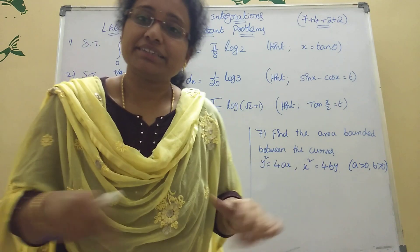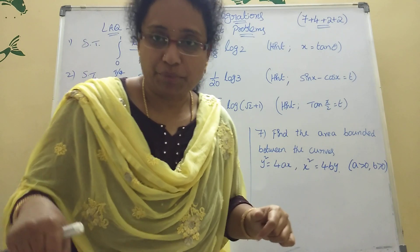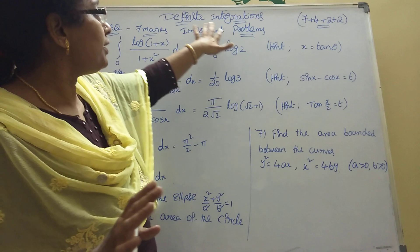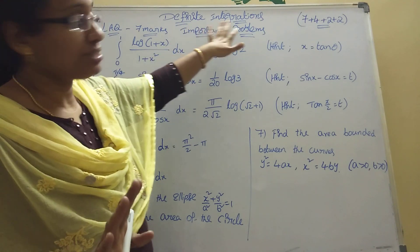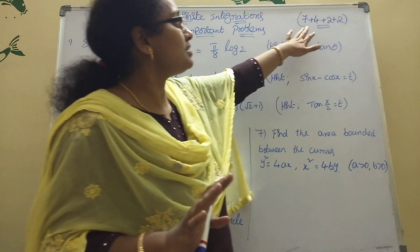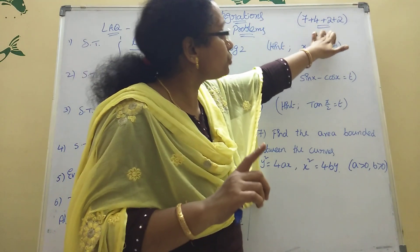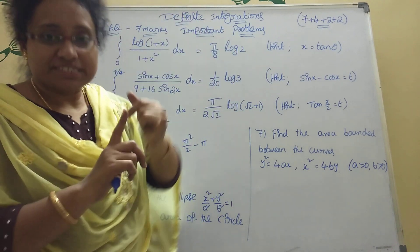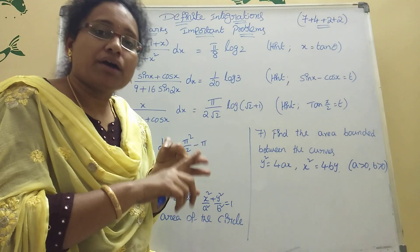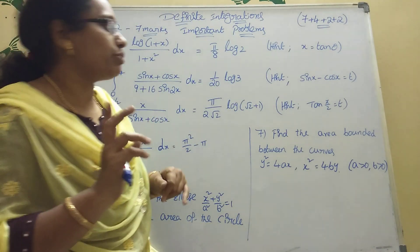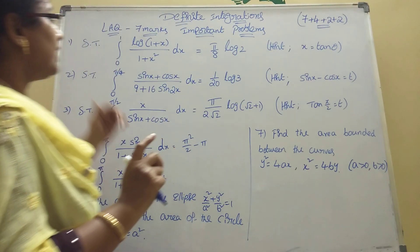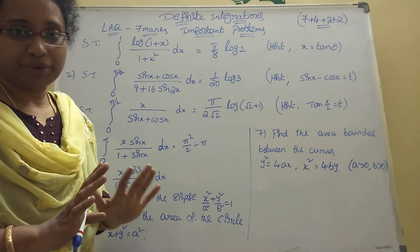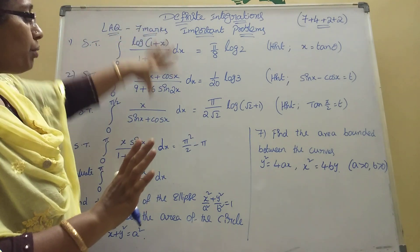Any doubts, write in the comment box. In this chapter — definite integrations — the chapter weight is seven plus four plus two plus two. So one seven-mark problem, one four-mark problem, and two two-mark problems.